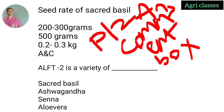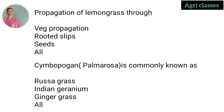ALFT-2 is a variety of which crop — Saccharide bacille, Ashwagandha, Senna, or Aloe vera? The correct answer is Senna. Propagation of lemongrass — through vegetative propagation, rooted slips, seeds, or all of the above? The correct answer is all of the above. Lemongrass is propagated through seeds, rooted slips, and vegetative propagation.